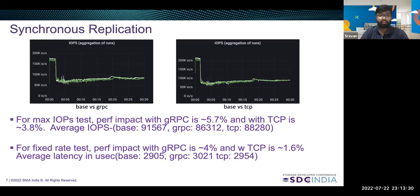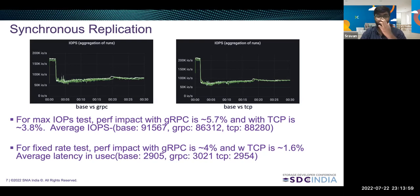For the fixed rate test, the performance impact with gRPC is around 4 percent and with TCP it is around 1.6 percent. The average latency in microseconds is visible on the slides for the base case, the gRPC case, and the TCP case. We again see that the use of secure TCP interfaces has helped to decrease the latency when compared to gRPC interfaces, even in the case of synchronous replication.